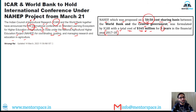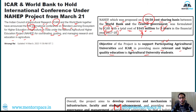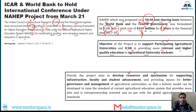The funding for NAIP was on a cost-sharing basis between the World Bank and the central government of India on a 50-50 basis. The project was formulated by ICAR. The objective of this project is to support participating agriculture universities and ICAR in providing more relevant and higher quality education to agriculture university students. Overall, the project aims to develop resources and mechanisms for supporting infrastructure, faculty, and student advancement, and providing better governance and management of agriculture universities.